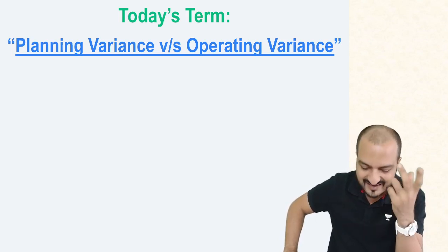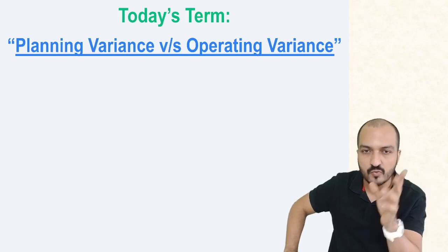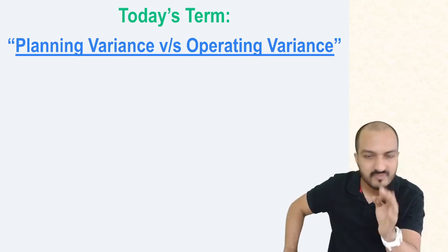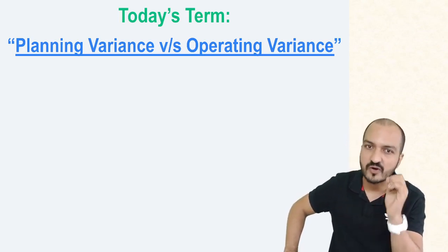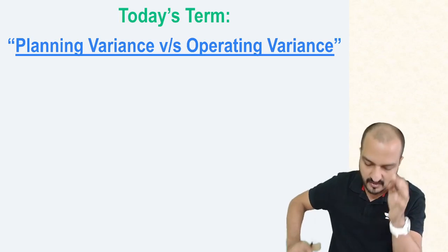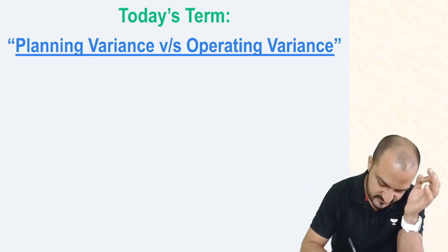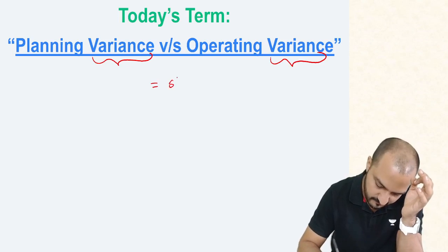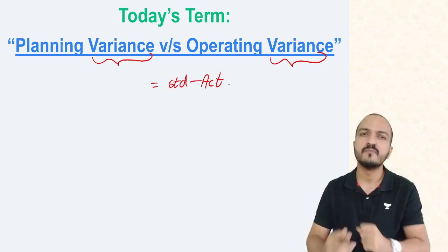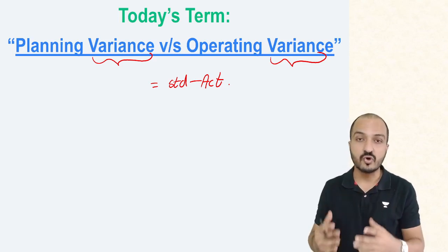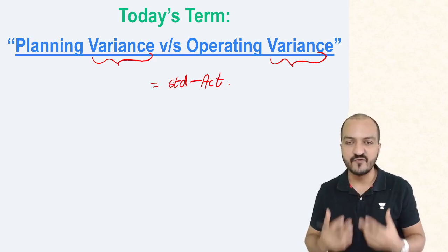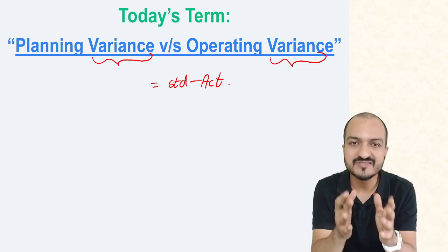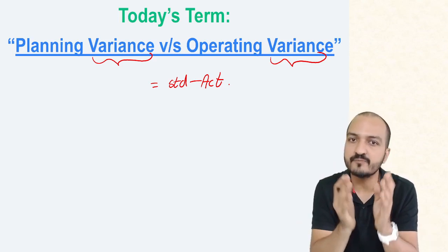What exactly is planning variance versus operating variance? Normally, variance means standard minus actual. Standard cost minus the actual cost is called the variance. This indicates the mistakes that the company has made.